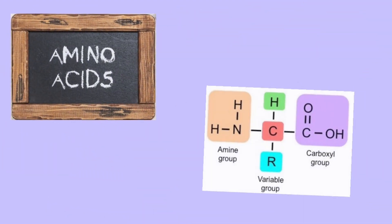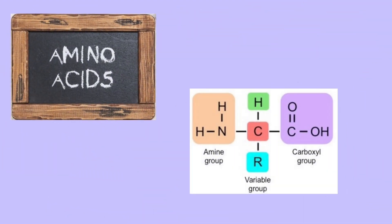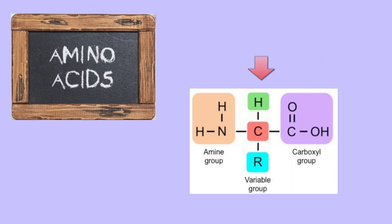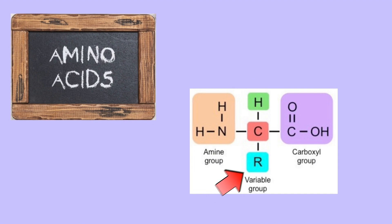An amino acid is an organic molecule. Amino acids all share a common basic structure with a central carbon atom bonded to an amine group, a carboxylic acid group, and a hydrogen atom. The organic R group, or side chain, is unique to each amino acid.